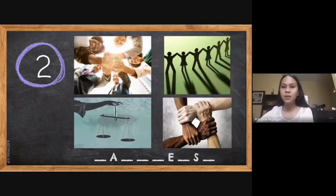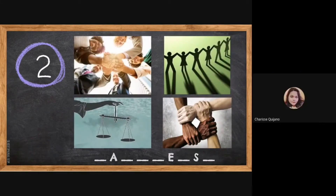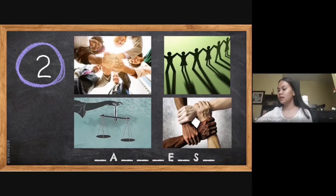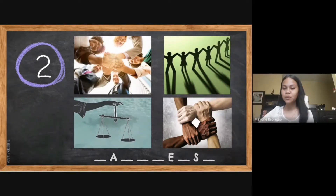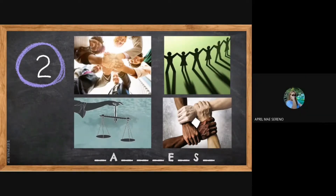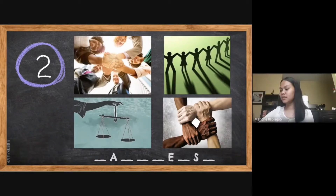Next four pictures. One student guesses Solidarity — incorrect. Another guesses Equality — also no. Then another answers: Perrinesse, ma'am. That's correct.